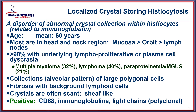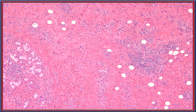Most often occurring in the head and neck, more than 90% of crystal storing histiocytosis cases are associated with some sort of lymphoproliferative or plasma cell dyscrasia. It usually shows large polygonal cells with a background of fibrosis and lymphoid elements, and crystals that are either scant or sheath-like in quality, positive with CD68 and polyclonal with light chains or immunoglobulins.